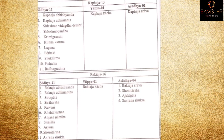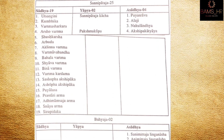Raktaja netrarugas are 16 types, of which 11 are sadhya: raktasya vishandhya, raktasya adhimantha, sirotpata, siraharsha, parvani, krishtavaruna, anjanamika, sirajala, arjuna, shunitavartma, avarnashukla. Yapya: raktaja kacha and raktasrava. Asadhya: shunitarsha, ajakajata, and savrana shukra.